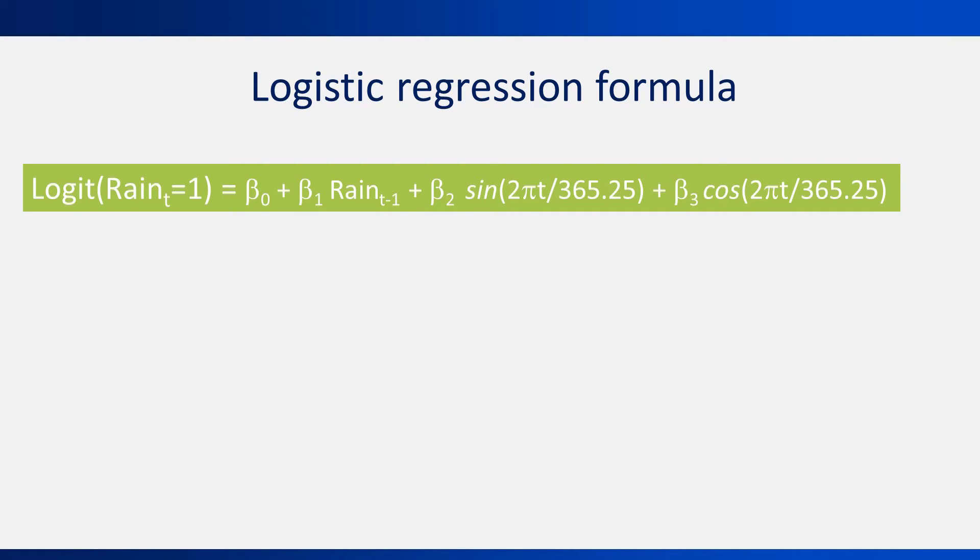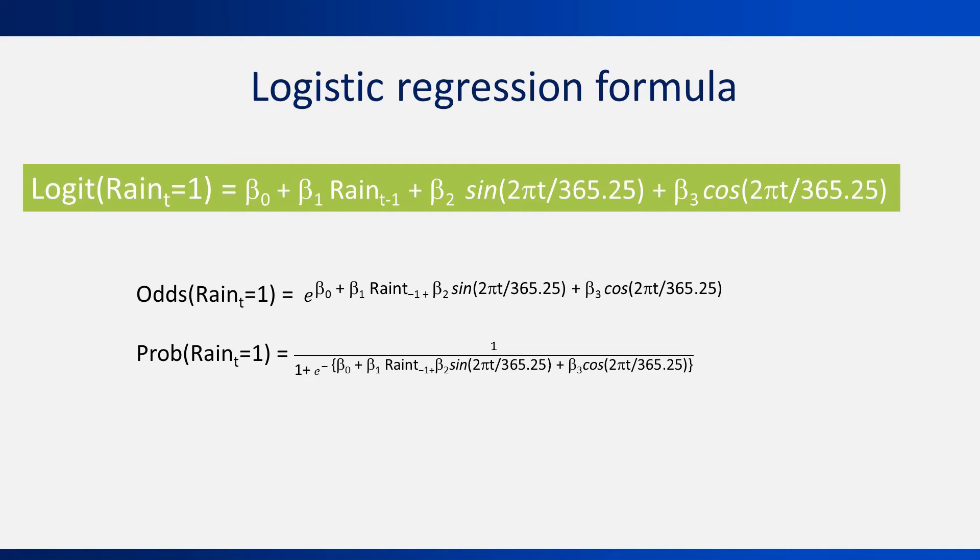At the top, we see the logistic regression formula for our Melbourne daily rain example. The second and third equations just want to show the meaning of the logistic regression in terms of the odds of rain and the probability of rain. They are all mathematically the same.